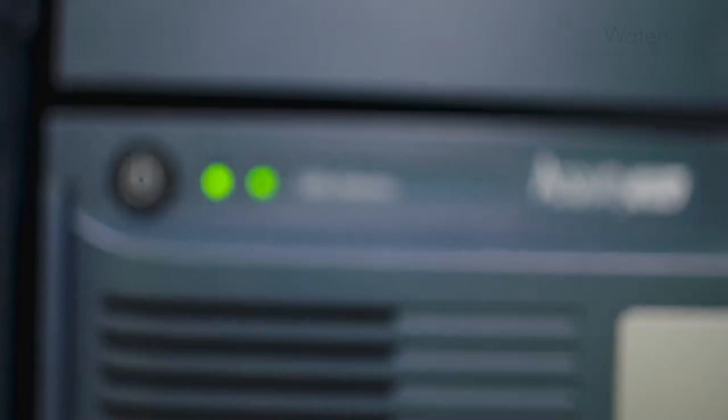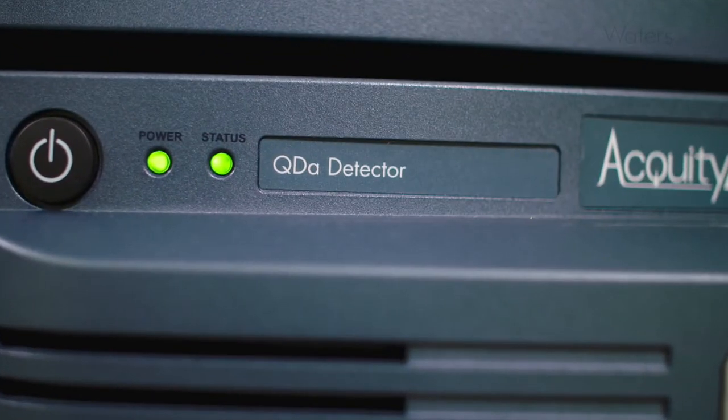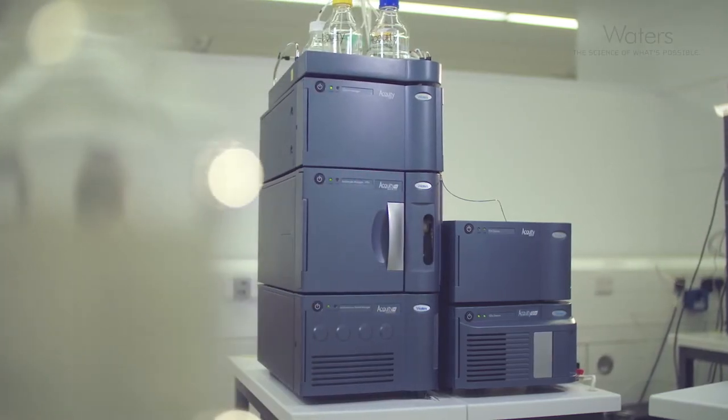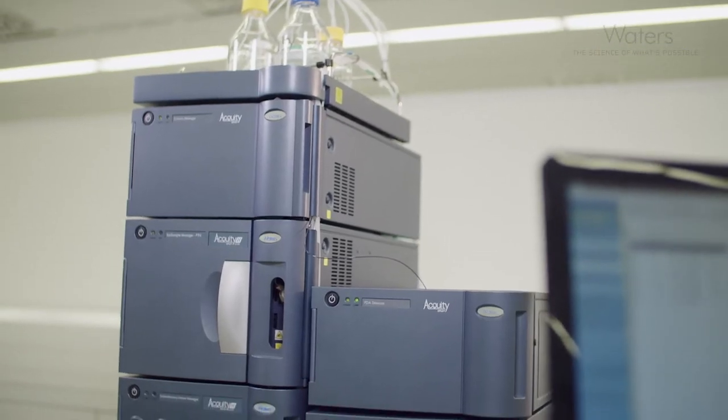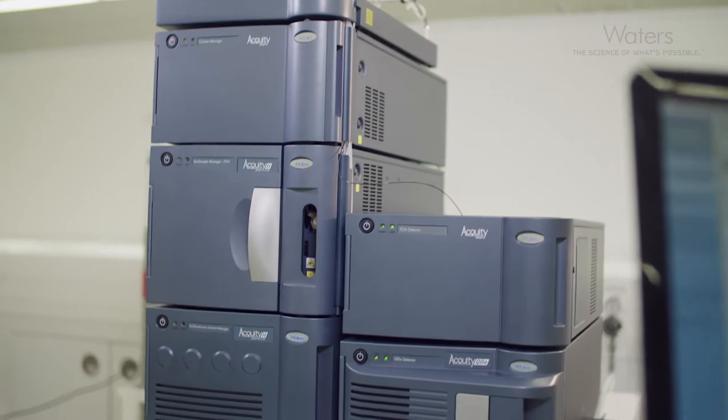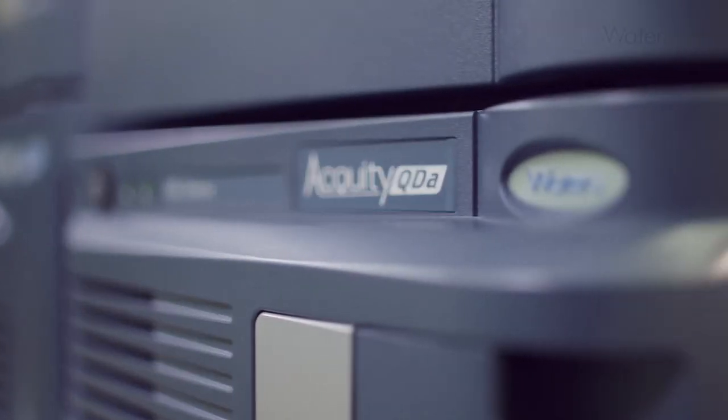The Acuity QDA detector was introduced a few years ago. It was released specifically based on requests from our customers to provide them with a small detector capable of producing mass data for the chromatographer. We believe it is the most compact mass detector on the market, and we certainly know that it's been the fastest selling mass product ever in our history.